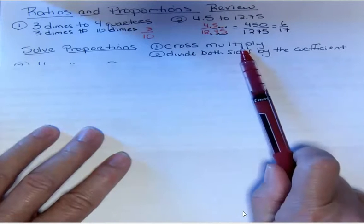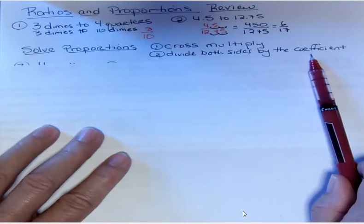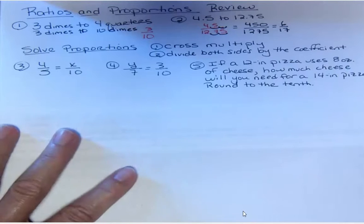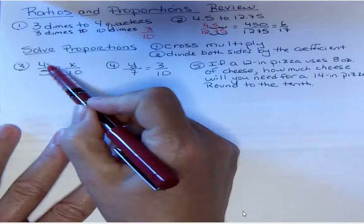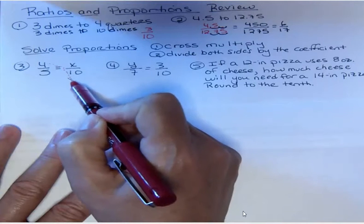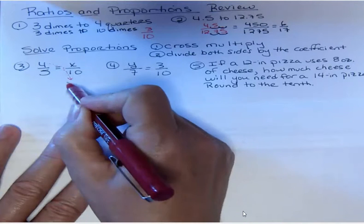What you want to do is cross multiply and then divide both sides by the coefficient. It's only two steps. We're going to cross multiply. That is, I'm going to multiply the numbers that are across from each other, so I'm going to do 4 times 10 and get 40.